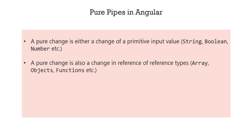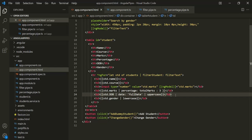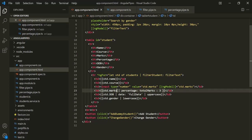Also, if the input on which we are using the pipe is of reference type and when the reference of that input changes, that is also a pure change. For example, here we are using this percentage pipe on student.marks. This marks is of number type, that means it is a primitive type. So when this value will change, that will be a pure change.